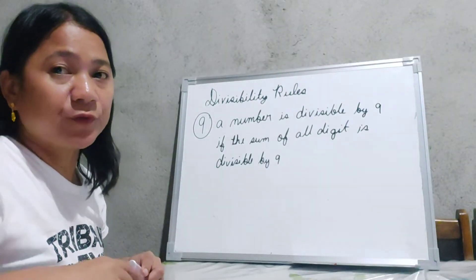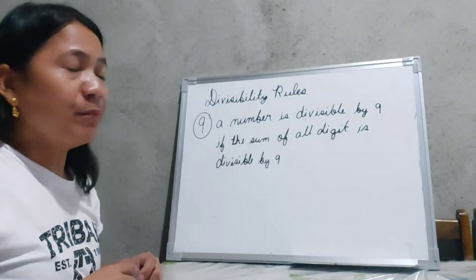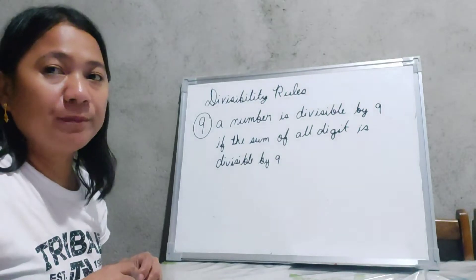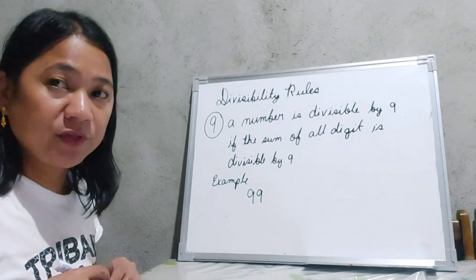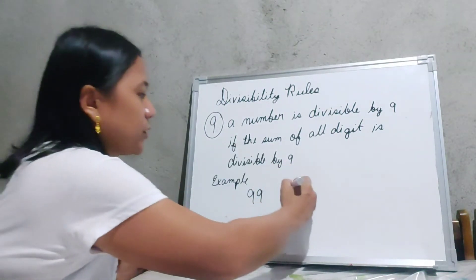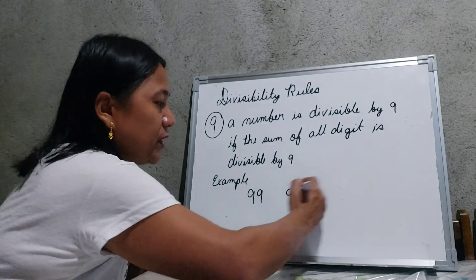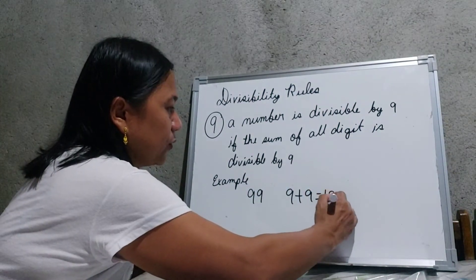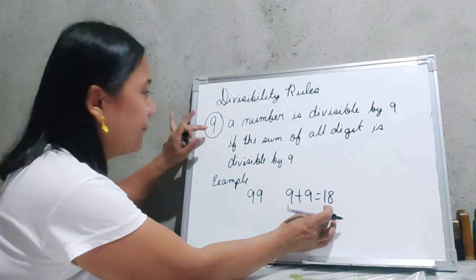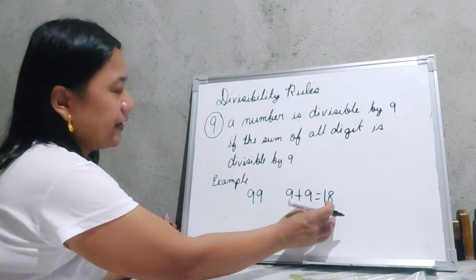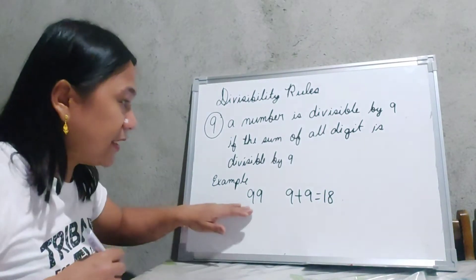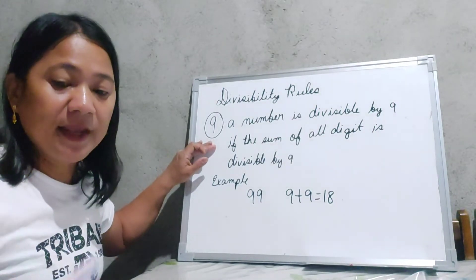The divisibility rule for 9 is: a number is divisible by 9 if the sum of all its digits is divisible by 9. We have 99 as our example. All we have to do is add the two digits: 9 plus 9 equals 18. Then 18 divided by 9 equals 2. So we have proved that 99 is divisible by 9.